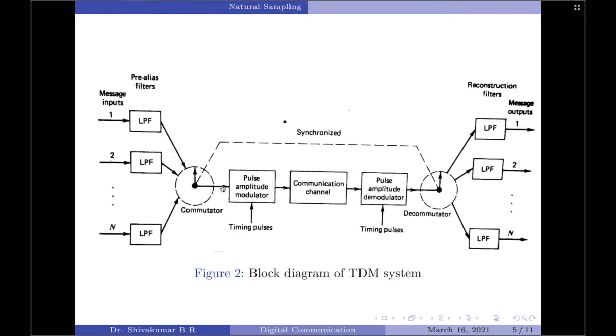Following the commutation process, the time multiplex signal is applied to a pulse amplitude modulator, the purpose of which is to transform the multiplex signal into a form that is more suitable for transmission over the communication channel. I will not dig too much into the operation of the pulse amplitude modulation. I have already created a video on this and I request you to kindly refer to that video for more information on pulse amplitude modulation.